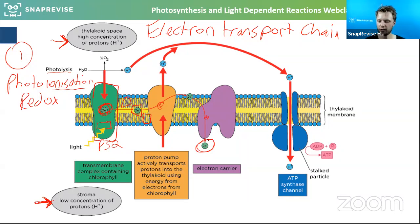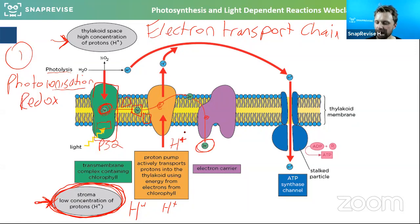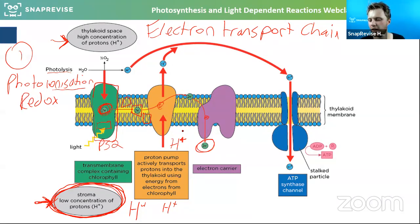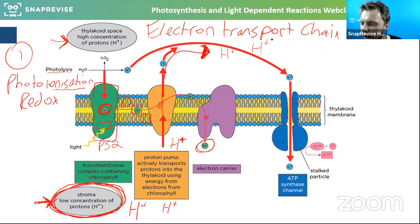There is something else also happening at this point. In the stroma there is a low concentration of hydrogen ions — these little protons. If they are sat close enough to this protein in the membrane, as those electrons go down and lose their energy, that energy is transferred to these hydrogen ions and they get pumped through this little protein. Those hydrogen ions are pumped through via secondary active transport — though you don't need to know that term. These hydrogen ions stack up at the top in the thylakoid space.